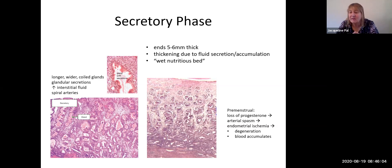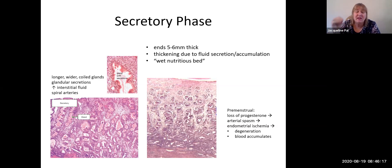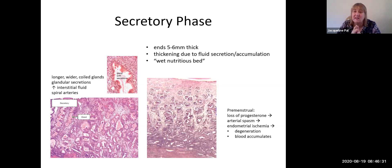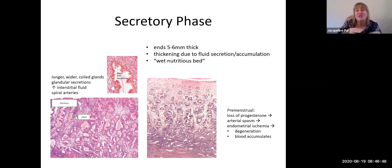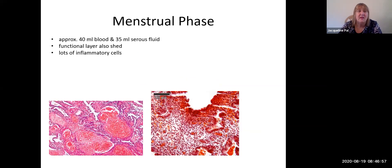For about 10 days after ovulation, the corpus luteum kicks out lots of progesterone. If there's no pregnancy and no hCG, it shuts off and progesterone levels plummet. Not only is there no progesterone to attach to receptors to continue fluid secretion, but that loss of progesterone causes the arterioles in the endometrium to undergo spasm. The narrowing reduces blood supply, cells don't get the nutrition they need, tissue starts degenerating, blood accumulates, and that is why sloughing occurs during the menstrual phase.